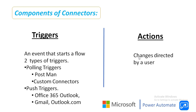First of all, we will see what a trigger is. A trigger is an event that happens when you start a flow or a process. Several connectors provide triggers that can notify your app when a specific event has occurred. There are two types of triggers in Power Automate: one is polling triggers and the other is push triggers.